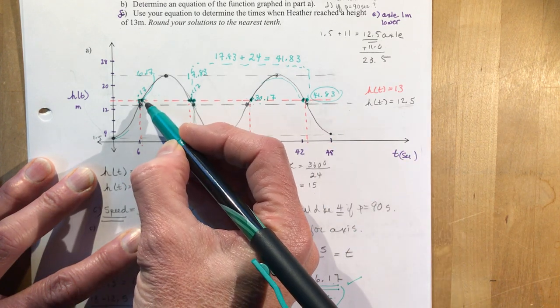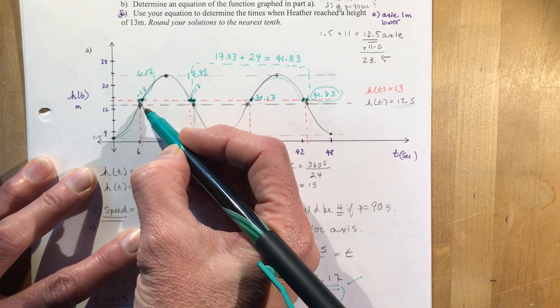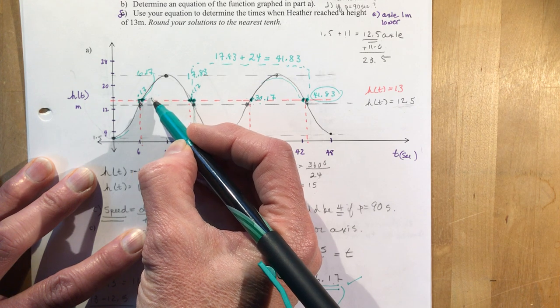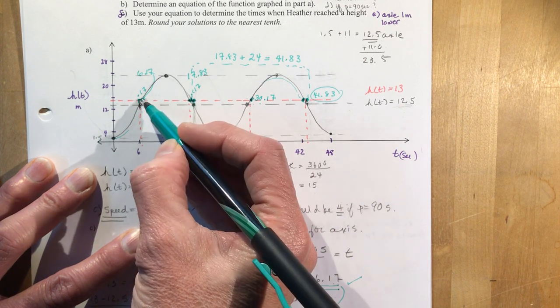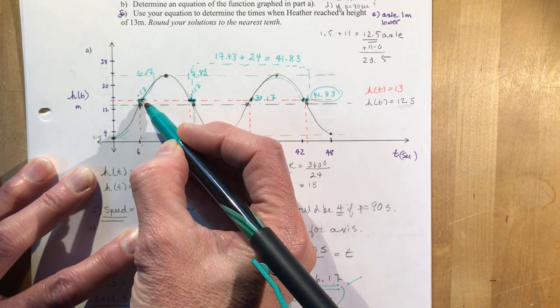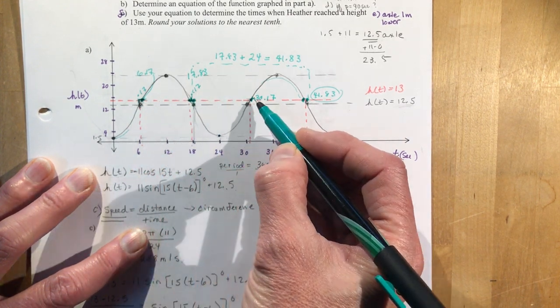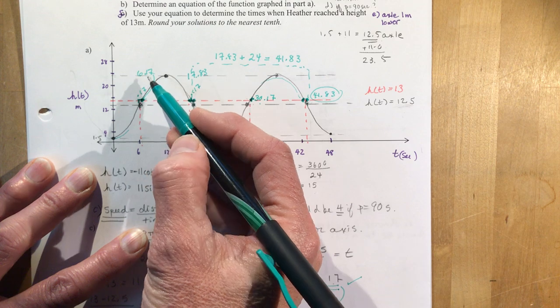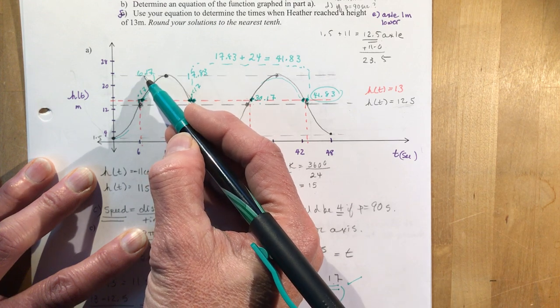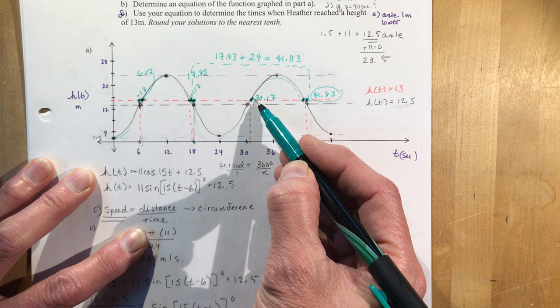This one of 6.17 is correct. To find the next one, that would be one complete cycle away. So you add 24 to 6.17, which gives you 30.17.